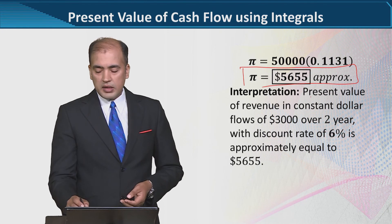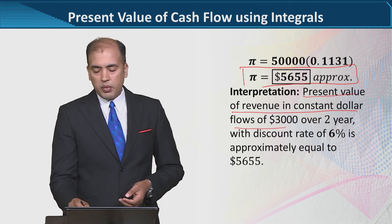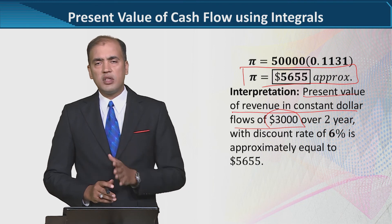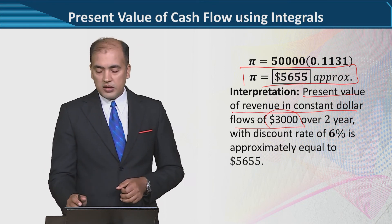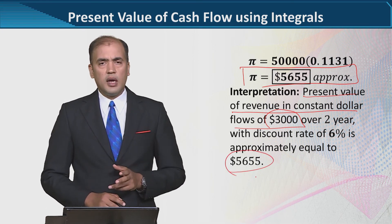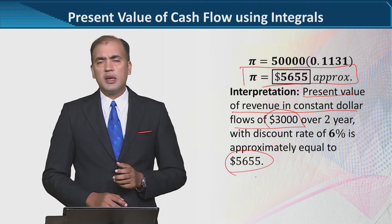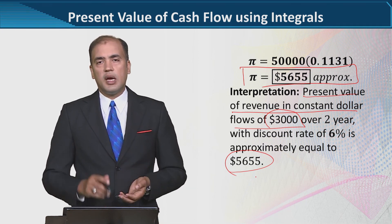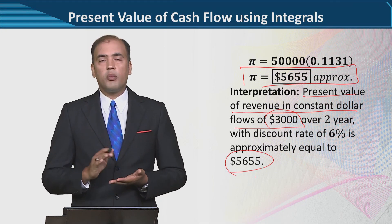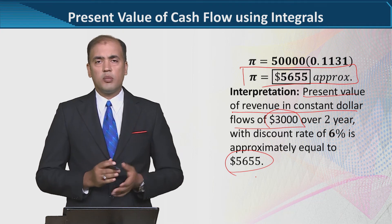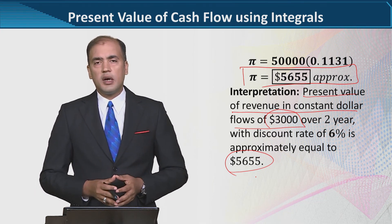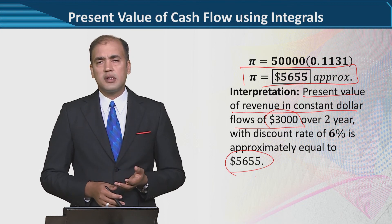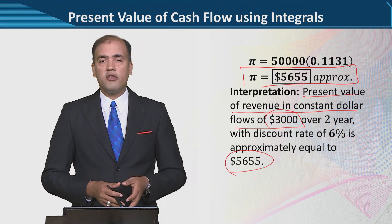So we have seen here that the present value of revenue at a constant 3,000 per year over 2 years — nominally 3,000 plus 3,000 equals 6,000 — but the present value that we get is less than 6,000, and it is 5,655. That is the very gist of present value: when we calculate it, it is discounted and its value is lesser than the apparent value, which in this case is 6,000. Instead, the present value is 5,655. So you have seen that present value analysis, which has pivotal importance when it comes to the analysis of investments and projects, can be calculated by using definite integrals.